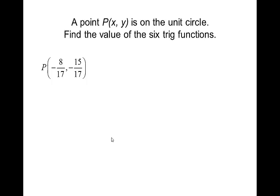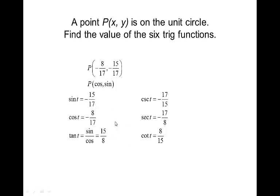Here's a point P on the unit circle — find the value of the six trigonometric functions. The point is negative eight-seventeenths, negative fifteen-seventeenths. The intersection point is down in quadrant three, and it's in the form of cosine, sine. The cosine is negative eight-seventeenths and the sine is negative fifteen-seventeenths. Then you have your reciprocals. Tangent is sine over cosine — the negatives cancel, so tangent is positive, as expected in quadrant three. The cotangent is the reciprocal of fifteen-eighths, so it's eight-fifteenths.